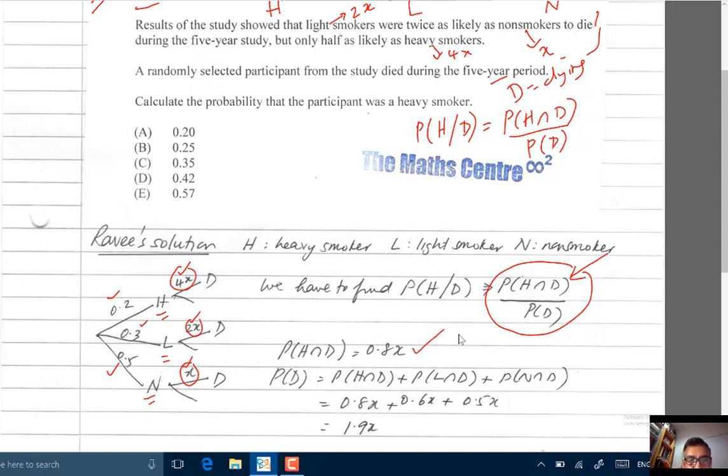So the probability of D, you can go along this branch, you can go along this branch, or you can go along this branch. So the probability of D will be probability of H and D, probability of L and D, probability of N and D. Add up these. Let's do that. 0.2 times 4X plus 0.3 times 2X plus 0.5 times X. You will get 1.9X.